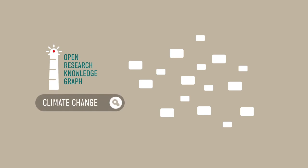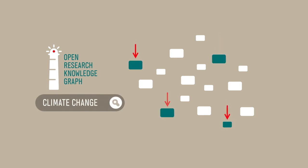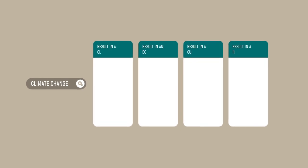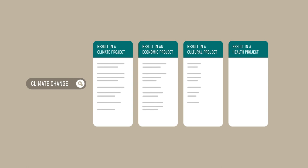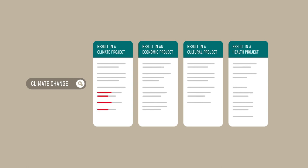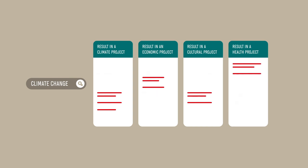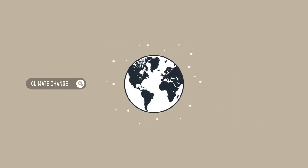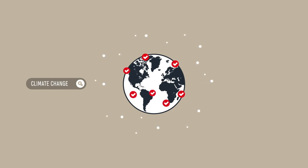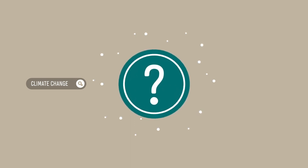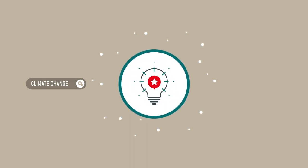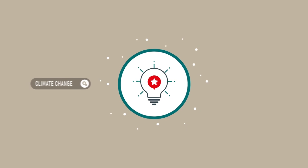Scholars can then explore knowledge in entirely new ways, automatically comparing literature along specific dimensions — such as problem, materials, methods or results. Besides more targeted searches, this will make it easier for researchers to summarize the state of the art in a given field. Such infrastructure helps integrate contributions from different disciplines, facilitating the discoveries needed to tackle society's current and future biggest challenges, such as climate change or infectious diseases.